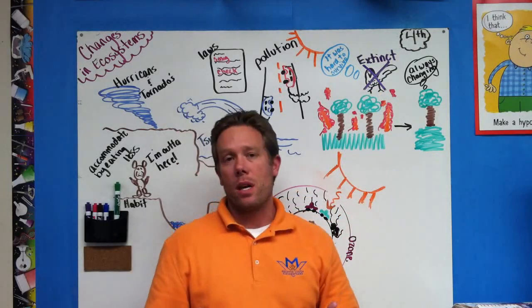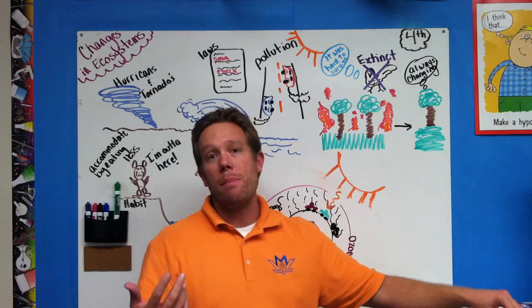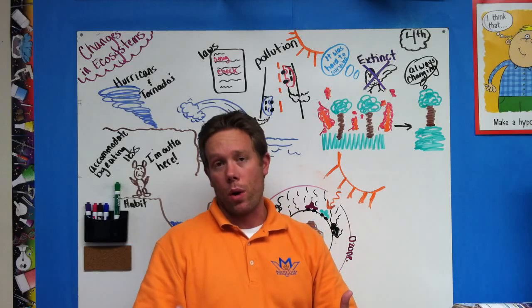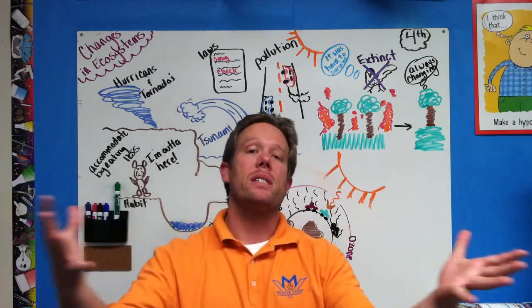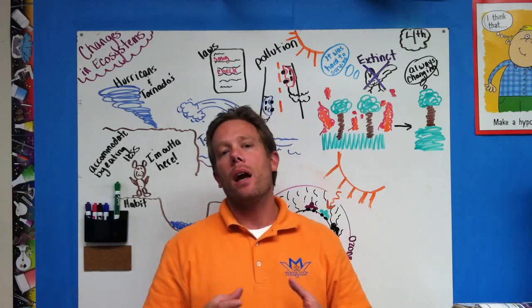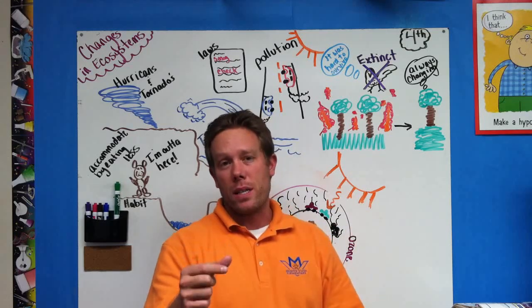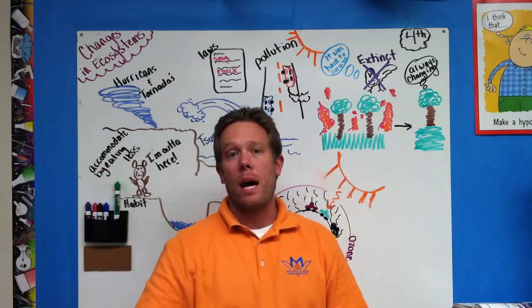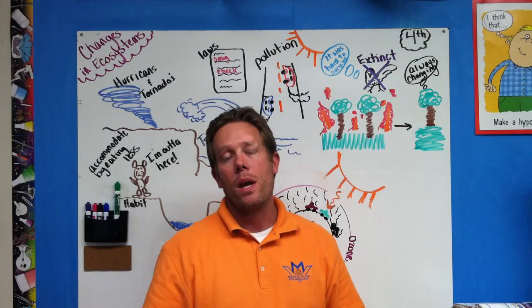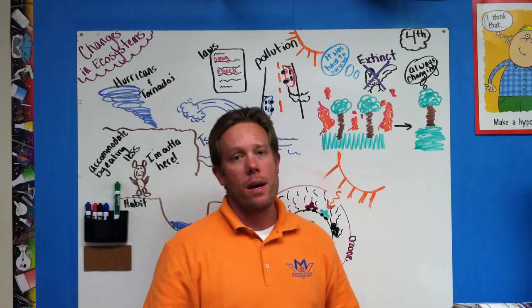For example, this California condor could actually become extinct and no longer exist because its home got destroyed. If it doesn't completely go out of existence and become extinct, it could become endangered by killing off many of its numbers so that very few exist. So if it gets completely wiped out, it becomes extinct. If there are very few of that species living anymore, then that particular species can become endangered, which means there are not very many of them alive.